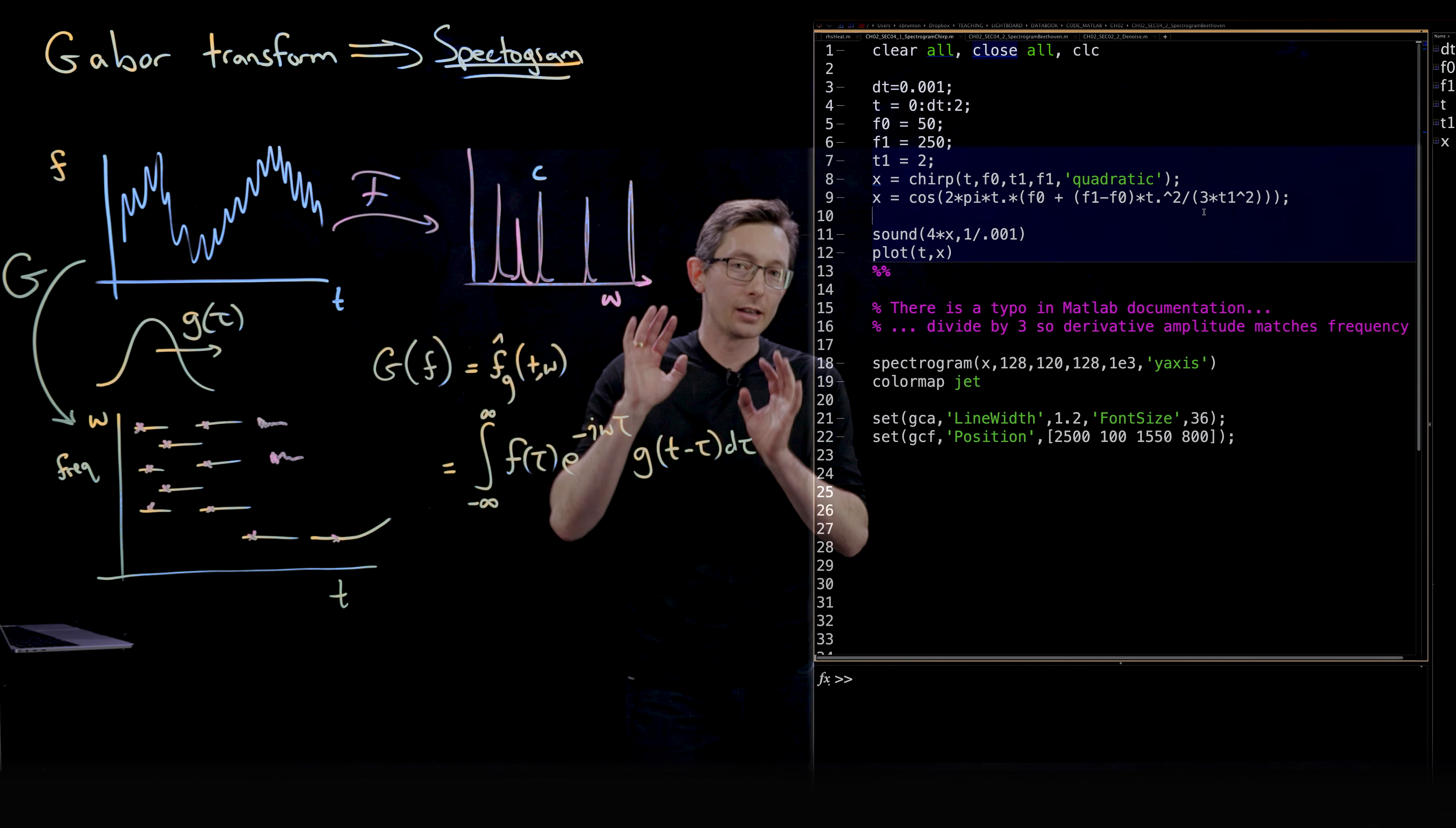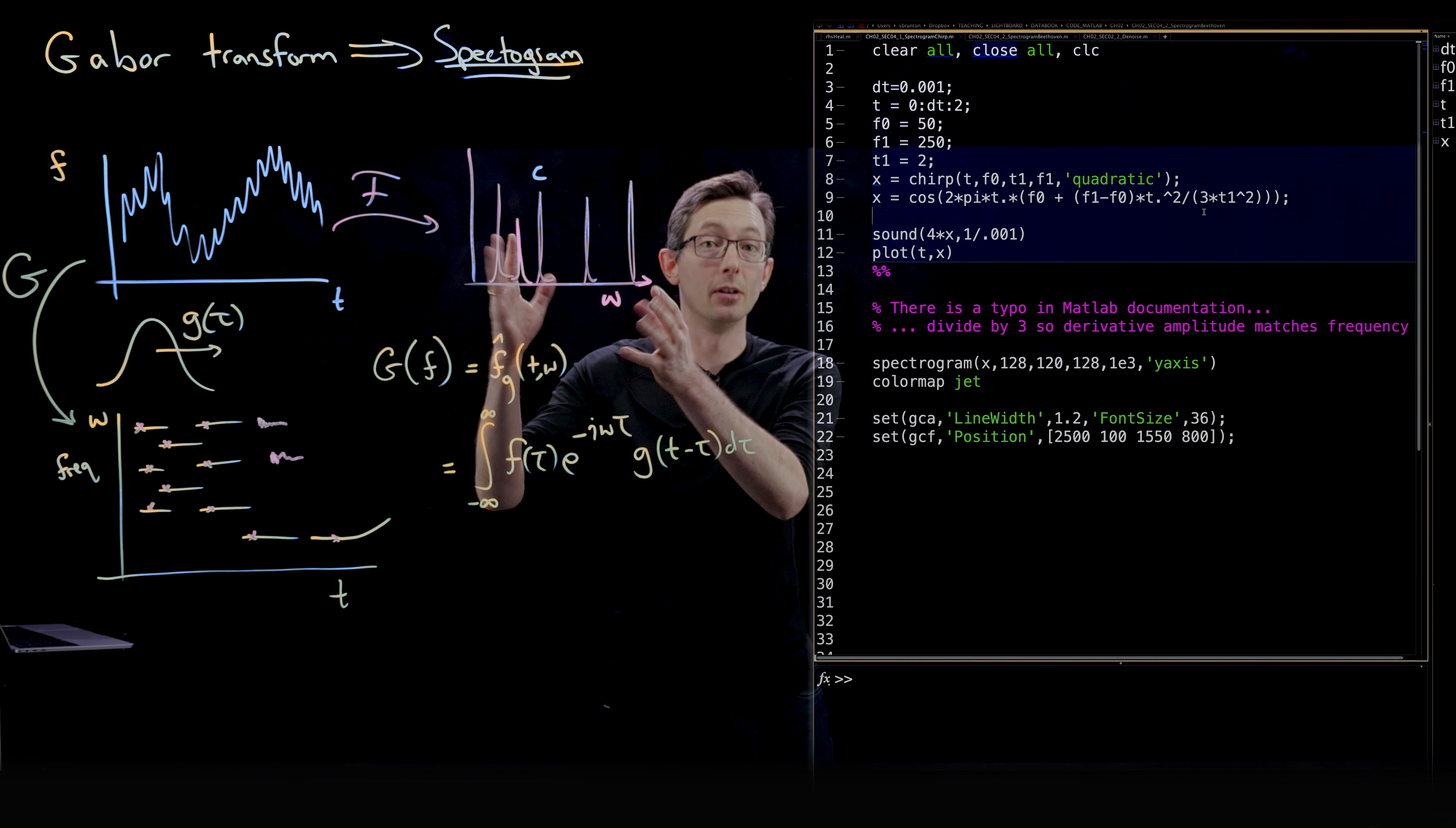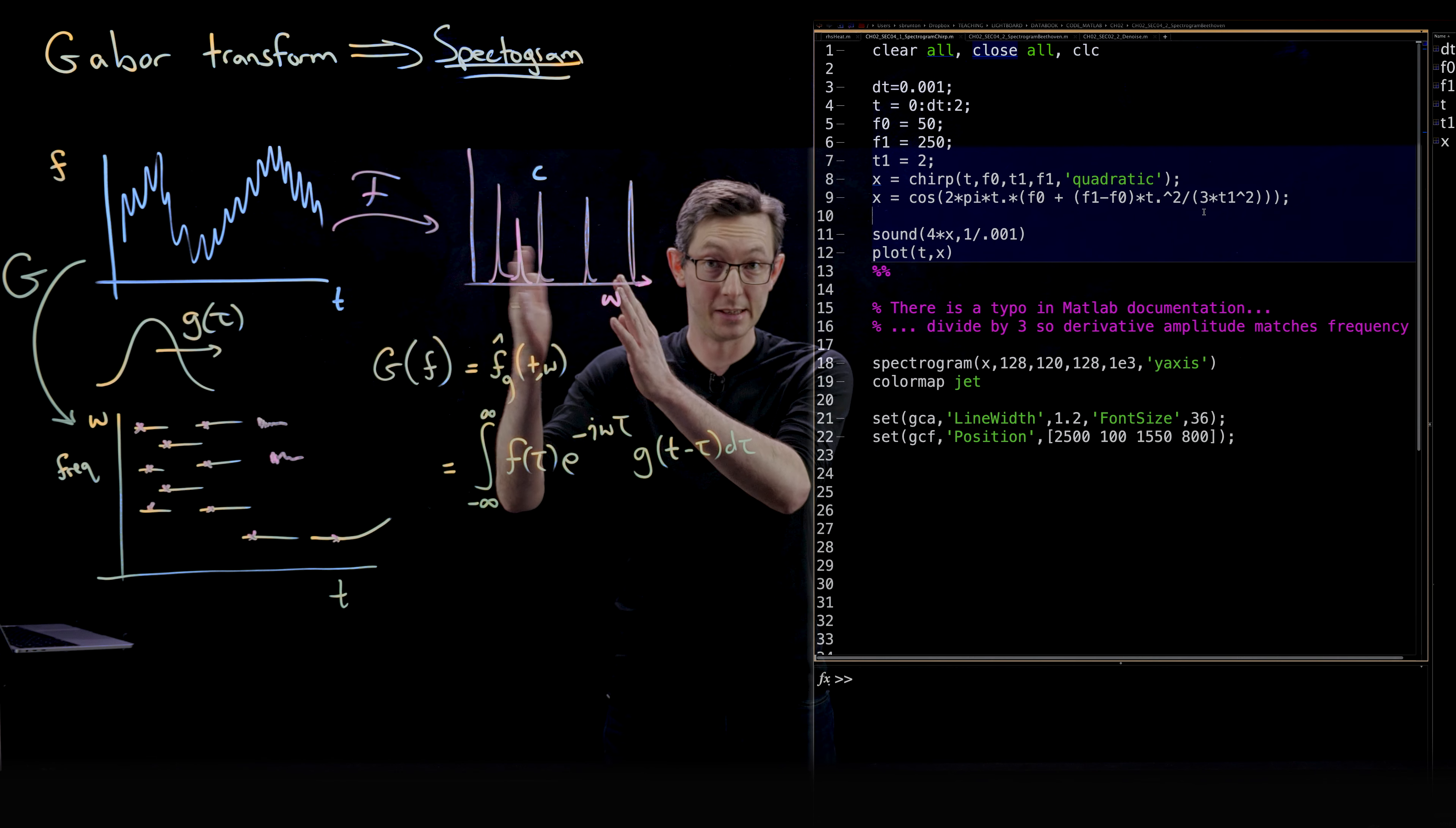Welcome back. In the last video I told you about the Gabor transform and how you can use it to compute the spectrogram, which is essentially a time frequency diagram that tells you not just what is the frequency content of a signal, but at what points in time do those frequencies turn on and turn off.